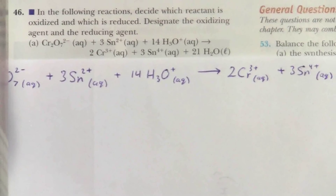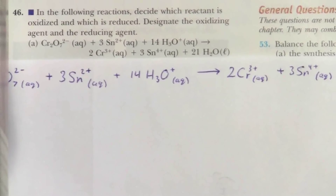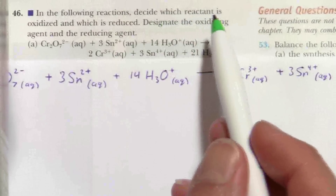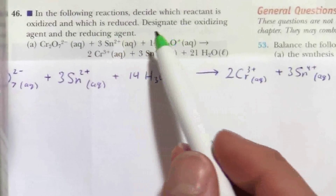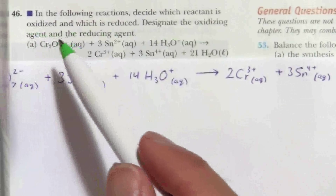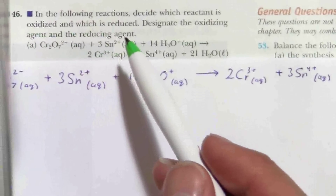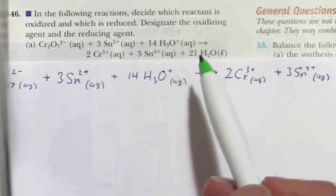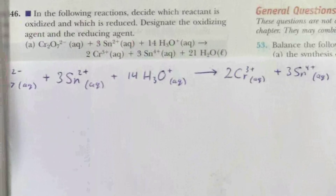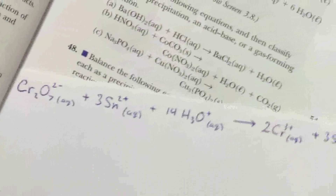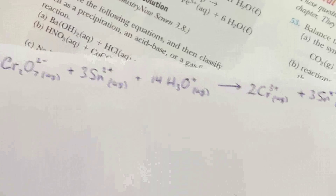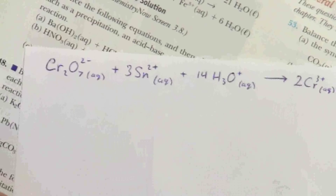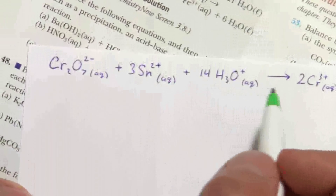In this problem we are asked to decide which reactant is oxidized and which is reduced, and then we're going to designate the oxidizing agent and the reducing agent. I have just copied this out on my paper and I'll be using that as a reference. So you look at this and it's like, this is a long equation, but don't let that get you down — we will just take this one part at a time.